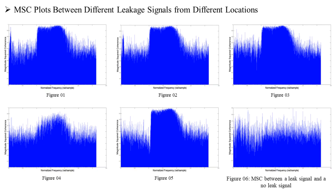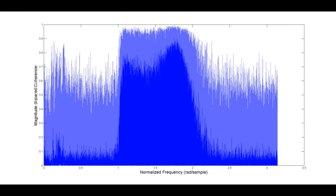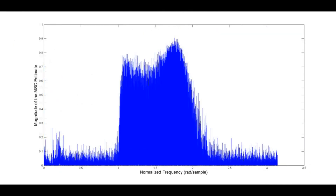As the first step, magnitude squared coherence between random data signals is computed. From these figures, a specific shape can be seen. Those figures are the magnitude squared coherences between random leakage signals. Figure 06 is the magnitude squared coherence between a leakage signal and a no-leak signal. So clearly it can be seen that from this method, a leakage could be clearly identified, even within the frequency range where the sound of the leakage is.